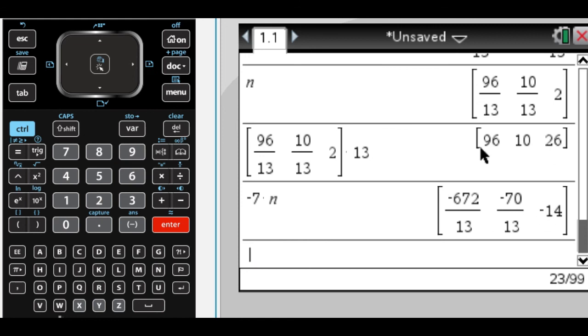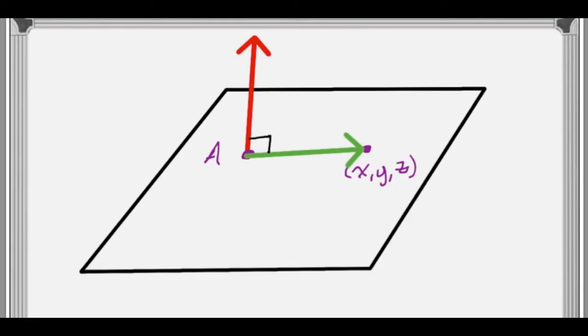If I had chosen 26, I would have gotten 96 and 10. If I had chosen -14, I would have gotten these. It doesn't really matter what I choose. And the dot product would always have been 0.